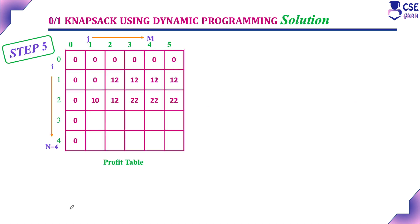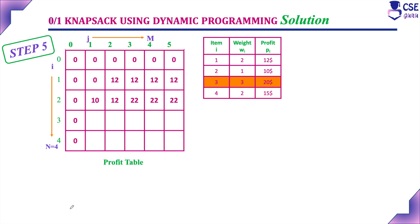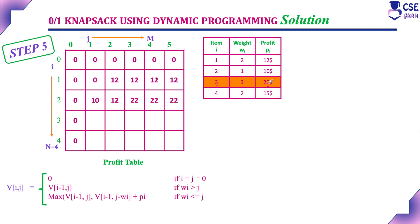Next is step 5. This is the profit table at the end of step 4. In step 5, we are going to consider item 3 with weight 3 and profit 20, and this is the recurrence relation. Here W_i is the weight of this object, which is 3 for all J values from 1 to 5. These are the values we need to calculate.